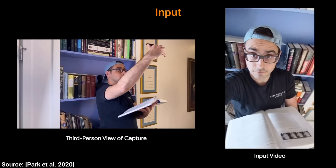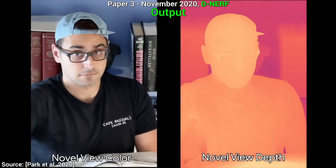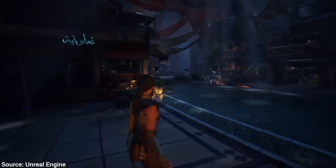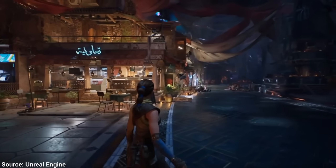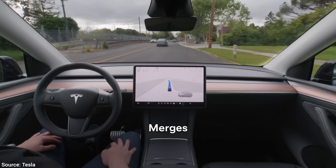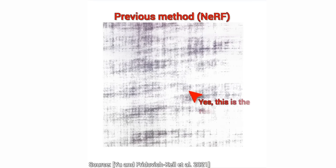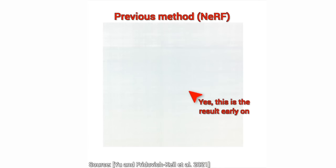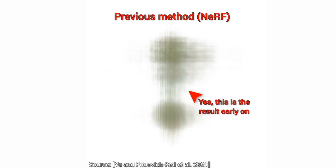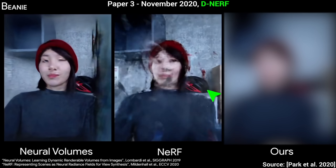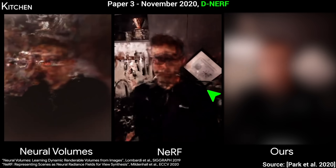Imagine taking just a few photos and having a computer generate a perfect, explorable 3D world — fantastic for video games and for training self-driving cars. That's the incredible promise of neural fields. But that promise often hits a snag. The training process frequently gets stuck in bad spots, leaving us with blurry results, lumpy surfaces, or weird floating artifacts in the scene. Not quite the digital worlds we hoped for.